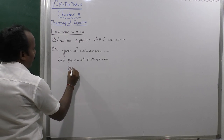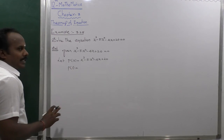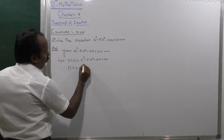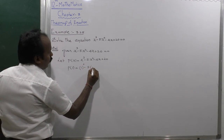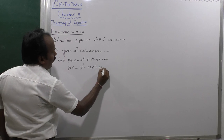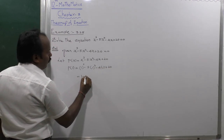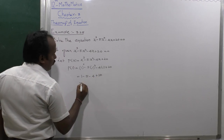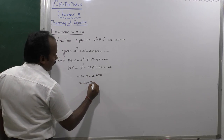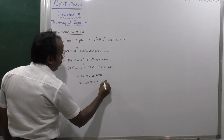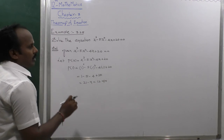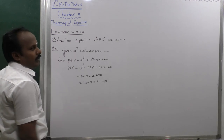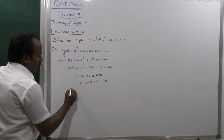First, let P(1): substitute x = 1. So 1 cubed minus 5 times 1 squared minus 4 times 1 plus 20 equals 1 minus 5 minus 4 plus 20, which equals 12. This is not equal to 0, so x = 1 is not a zero of the polynomial.